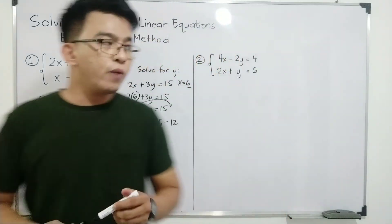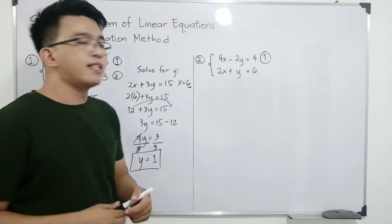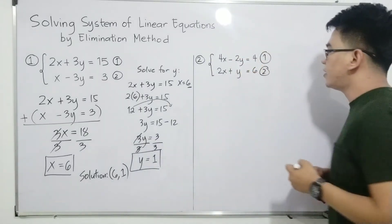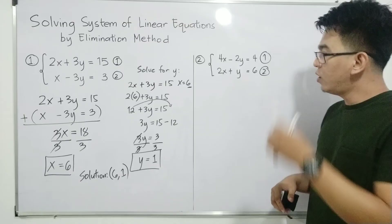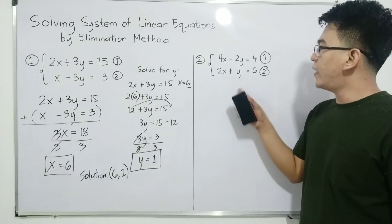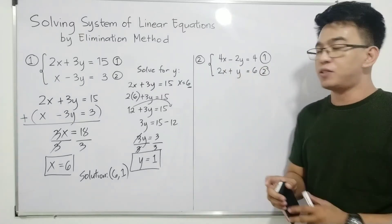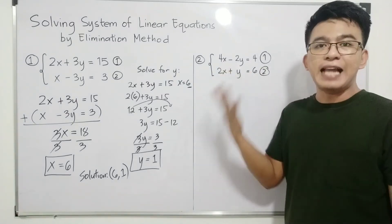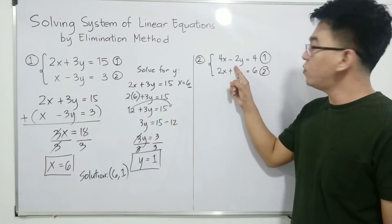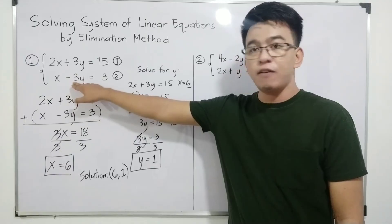Now for system number 2: the first equation is 4x minus 2y equals 4, and the second equation is 2x plus y equals 6. Analyzing these two equations, there are no coefficients that are already additive inverses. The coefficients of x are 4 and 2, and the coefficients of y are negative 2 and positive 1 — unlike the previous example where we had 3 and negative 3.